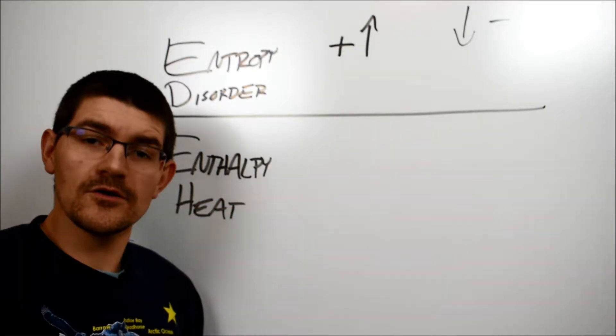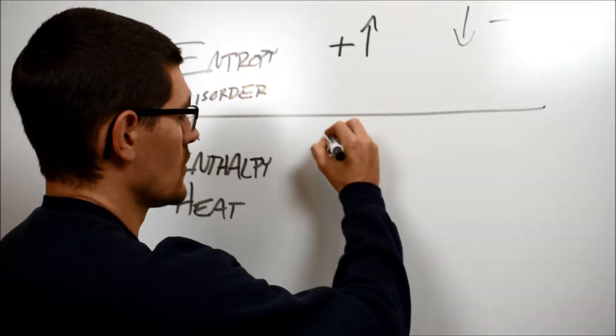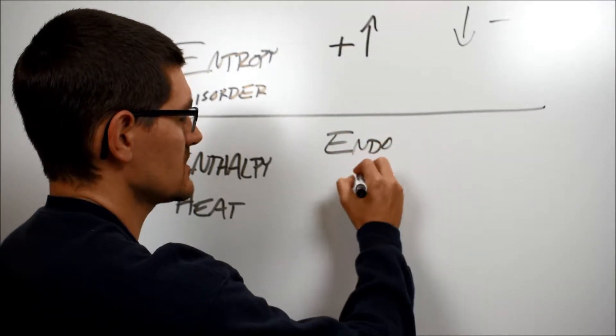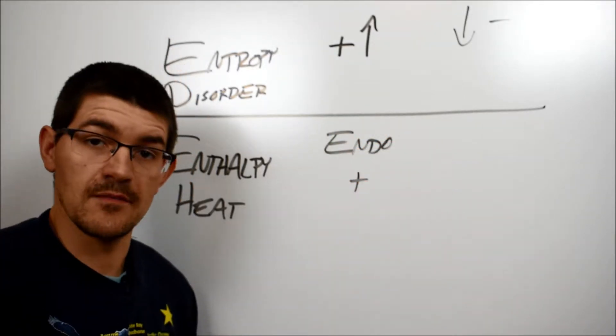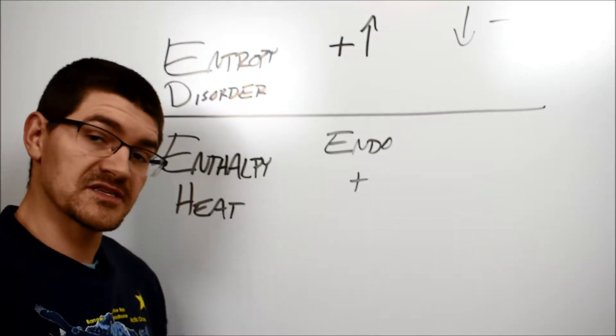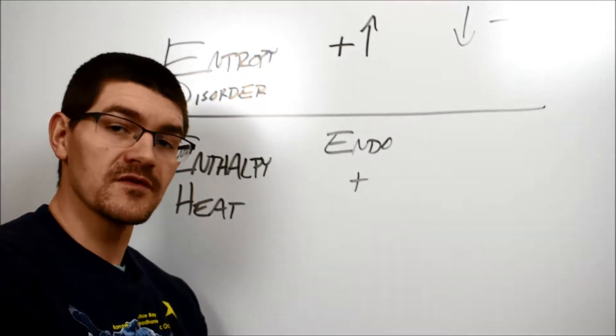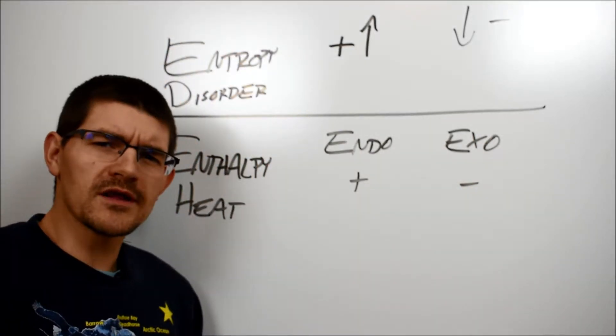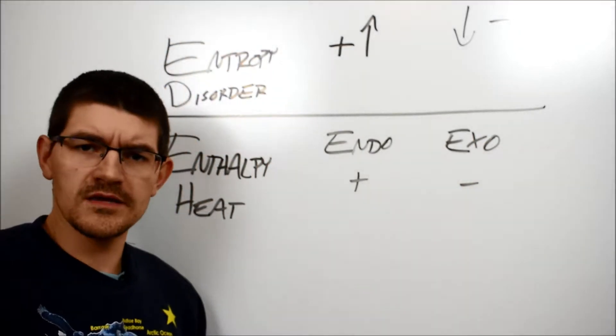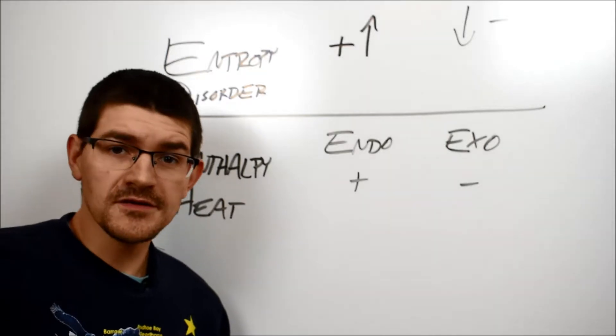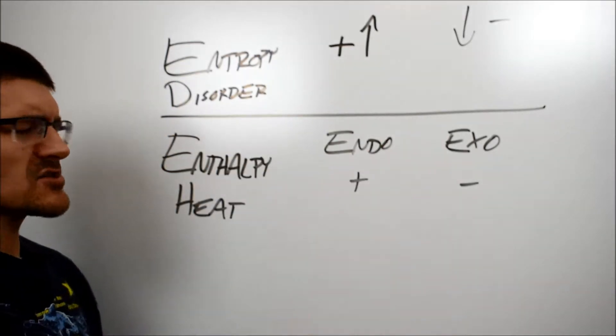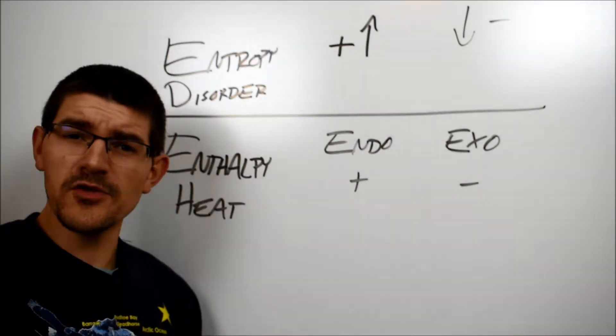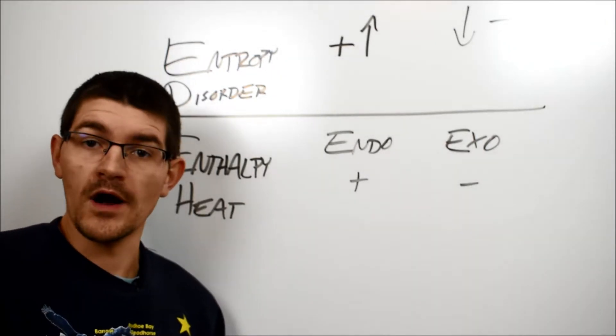If a process requires energy to happen we call that endothermic and an endothermic process is represented as a positive number in enthalpy. The flip side, an exothermic heat evolving reaction is represented by a negative number. The trouble here is we know water can exist as a liquid or as a solid or really for that matter as a gas also, but who wins in the discussion here? Is it the entropy or the enthalpy that decides what state that water is going to be in?